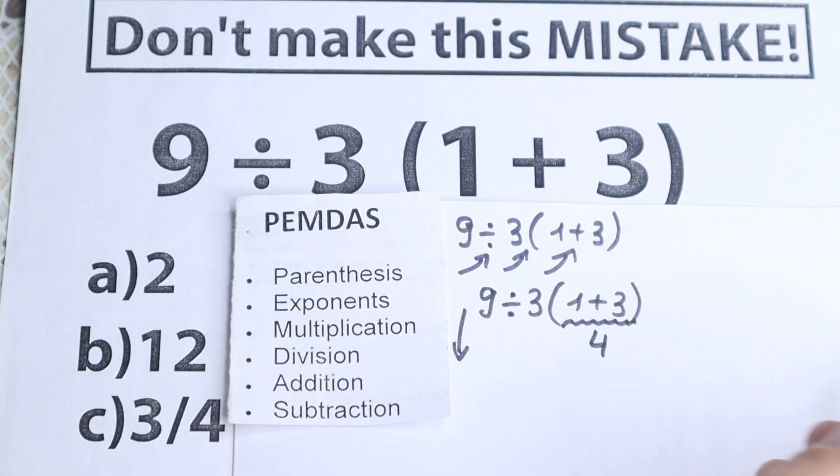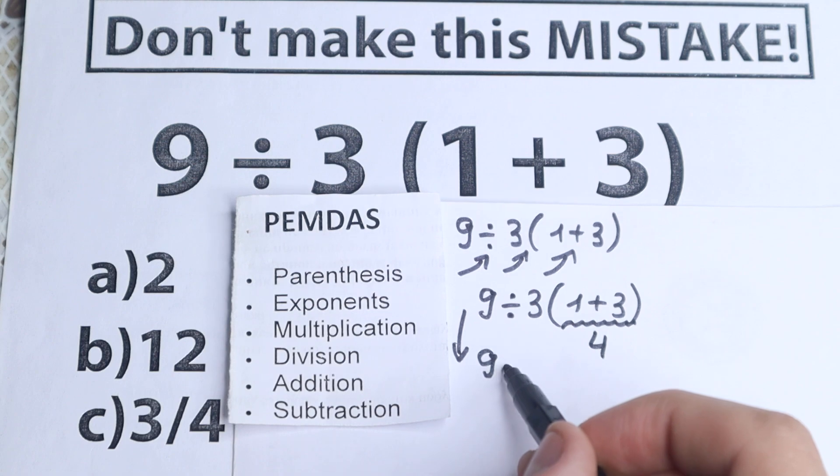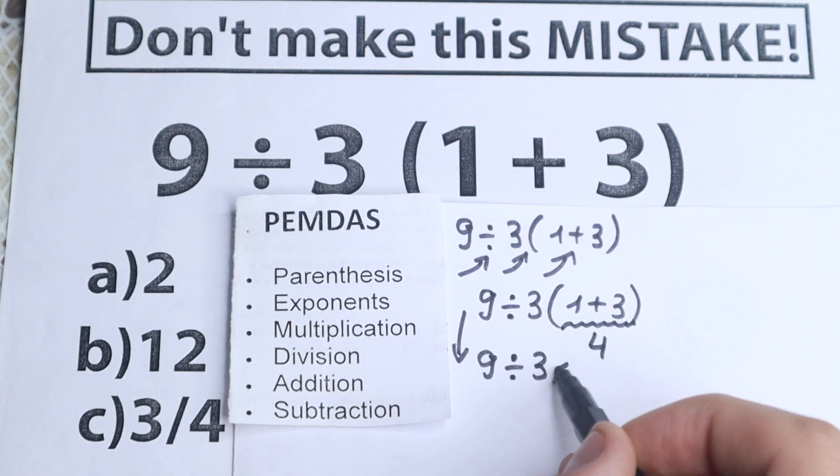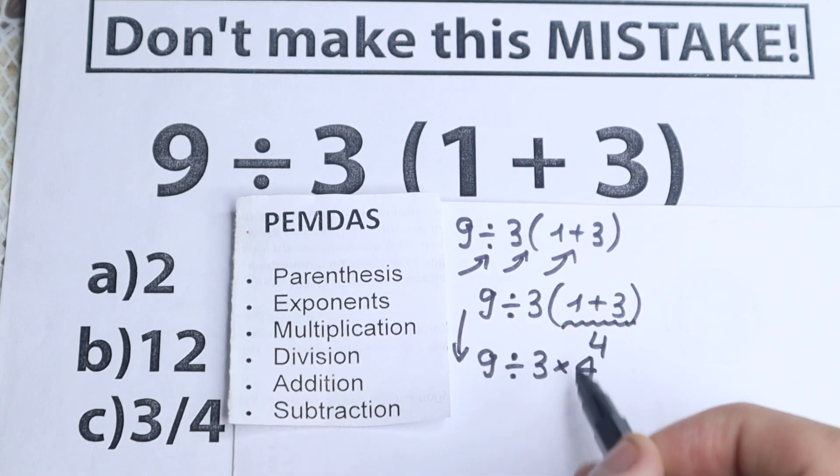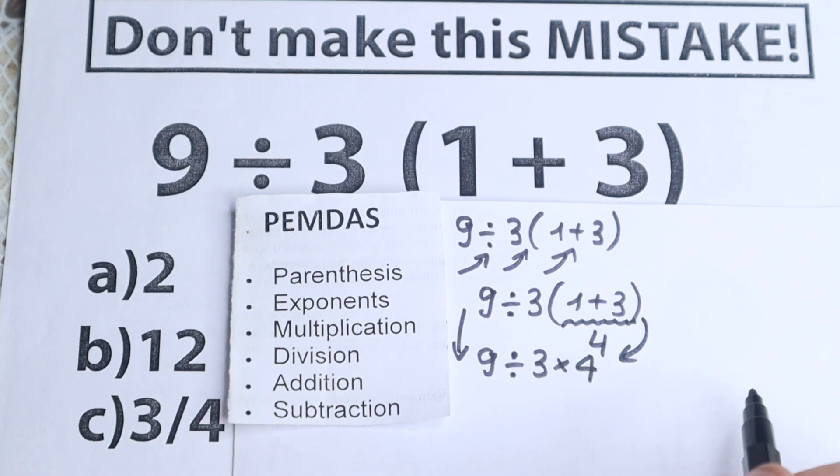So as a result, we no longer have these parentheses. We have 9 divided by 3 times 4. So from this expression, we have this one, which is really great. Let's go to the next step.